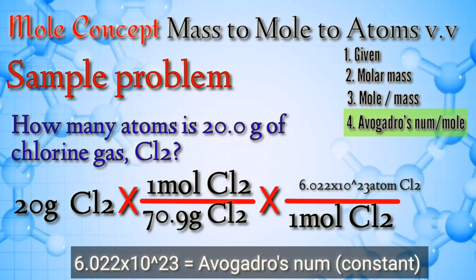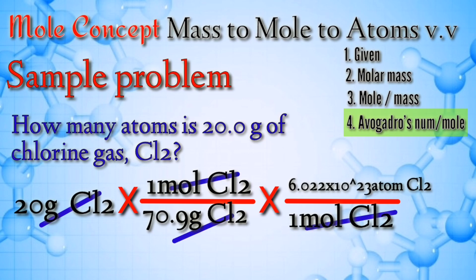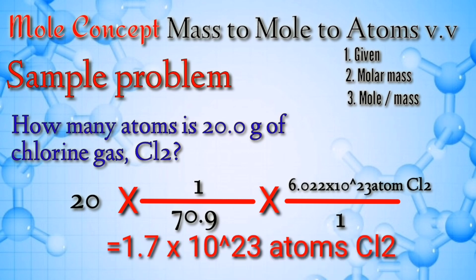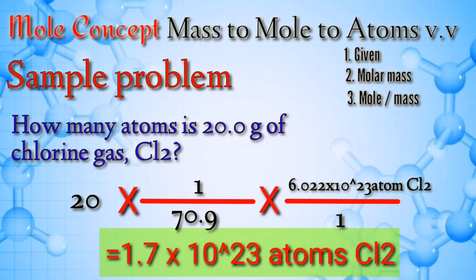Our mole-to-Avogadro's number ratio is: one mole of chlorine gas is to 6.022 times 10 to the 23rd power. We cancel out the grams and the moles, leaving the number of atoms. Computing: 20 times 1 divided by 70.9, times 6.022 times 10 to the 23rd power, divided by 1 equals 1.7 times 10 to the 23rd power atoms of chlorine gas.